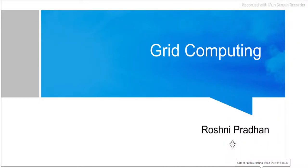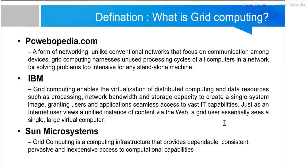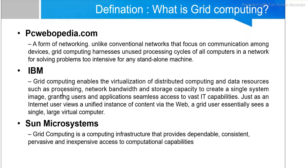In this lecture, we are going to discuss grid computing. It is a continuation of the cloud computing lecture series where we have already discussed distributed computing in the previous video. The first definition is from Webopedia: grid computing is a form of networking that, unlike conventional networks that focus on communication among devices, harnesses unused processing cycles of all computers in a network.